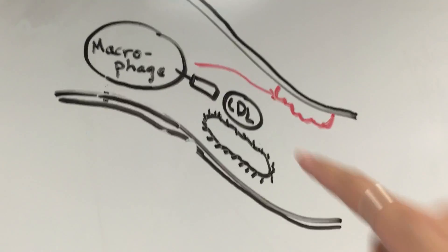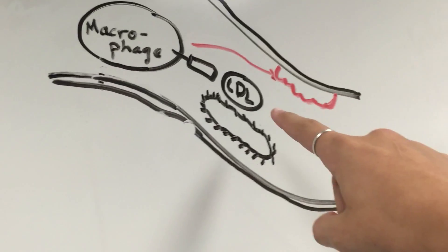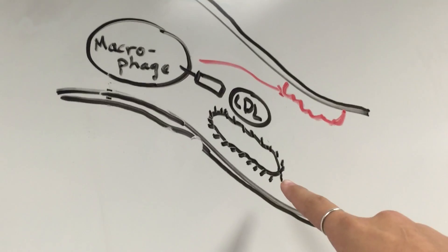They locate low-density lipoproteins, or LDLs, also known as bad cholesterol, and pathogens, such as bacteria, that are floating in the blood.